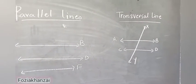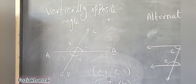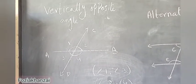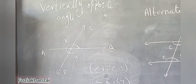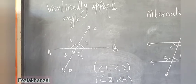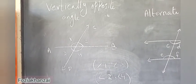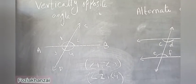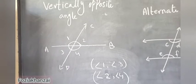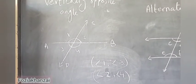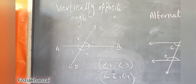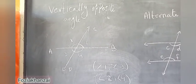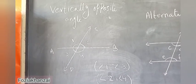The next heading: vertically opposite angles. AB is a straight line and CD is a transversal line. Now we have four angles: angle 1, angle 2, angle 3, and angle 4. Angle 1 and angle 3 are on the same side of the transversal line; angle 2 and angle 4 are on the other side. So angle 1 and angle 3 are called vertically opposite angles, and angle 2 and angle 4 are also vertically opposite angles.